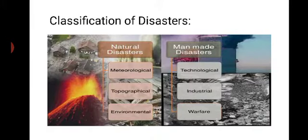In the classification of disasters, there are two main categories: natural disasters and man-made disasters. Natural disasters include meteorological, topographical, and environmental disasters. Man-made disasters include technological, industrial, and warfare disasters.